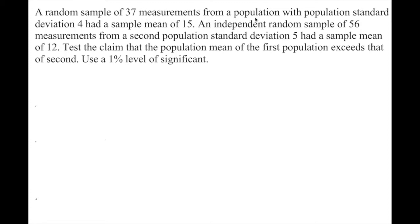A random sample of 37 measurements from a population with a population standard deviation of 4 had a sample mean of 15. An independent random sample of 56 measurements from a second population with a standard deviation of 5 had a sample mean of 12. Test the claim that the population mean of the first exceeds the population mean of the second.